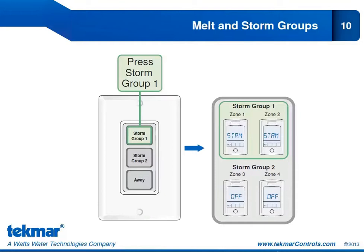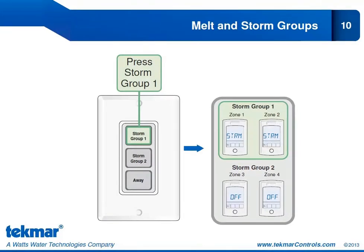On the user switch you would have storm group 1, storm group 2, and away. When programming the 654s, I can set zone 1 and zone 2 to be part of storm group 1. Whenever I press the storm group 1 button on the user switch, it will trigger the storm operation for zones 1 and 2 only — zones 3 and 4 remain off. I can also program zones 3 and 4 to be part of storm group 2, so pressing that button triggers storm operation for those zones.